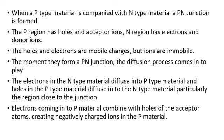The holes in the P-type material diffuse into the N-type material, particularly in the region close to the junction. The electrons coming into the P-material combine with holes of the acceptor atoms, creating negatively charged ions in the P-material.